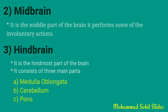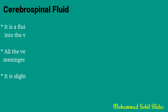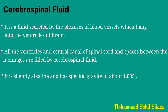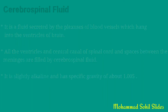Moving on to the next topic: cerebrospinal fluid. It is a fluid secreted by the plexus of blood vessels which hang into the ventricles of the brain. All the ventricles, the central canal of the spinal cord, and spaces between the meninges are filled by cerebrospinal fluid. It is slightly alkaline and has a specific gravity of about 1.005.